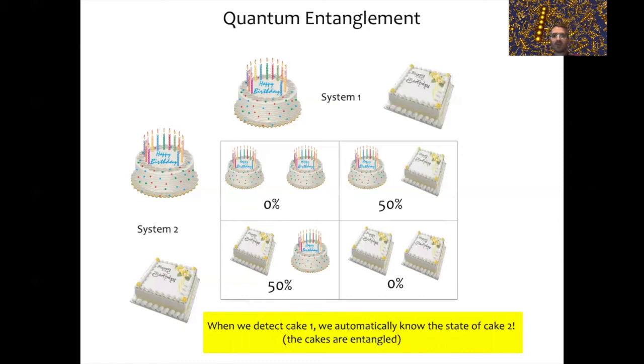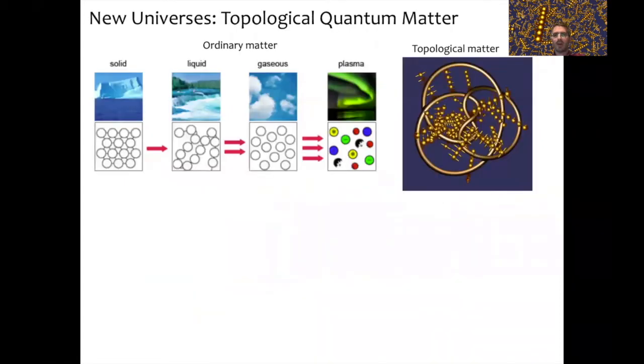Doing something on cake number one told us something about cake number two that we didn't know in the beginning. The strange thing about this experiment is that you can separate these cakes even to the opposite corners of the universe, and quantum mechanics would still tell you that measuring something on cake number one would tell you something about cake number two, no matter how far apart they are from each other. Quantum entanglement is an extremely mysterious and fascinating phenomenon, but what's important for us today is that it has very direct manifestations and leads to the formation of new phases of matter which we call topological phases of matter.